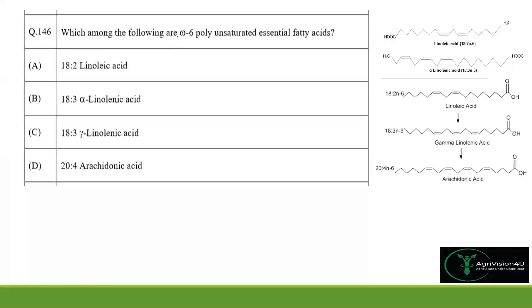Question 146 asks which are omega-6 polyunsaturated essential fatty acids. The options include: 18:2 linoleic acid, 18:3 alpha-linolenic acid, 18:3 gamma-linolenic acid, and 20:4 arachidonic acid. Linoleic acid has 18 carbons with two double bonds at positions 9 and 12 from the carboxyl end.